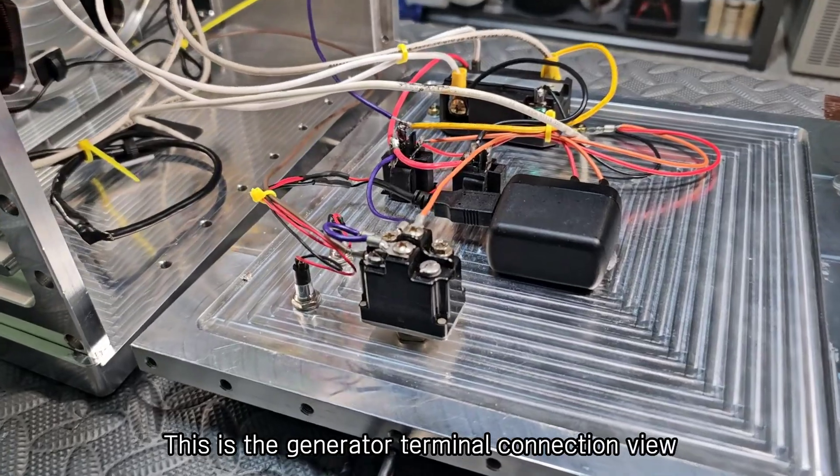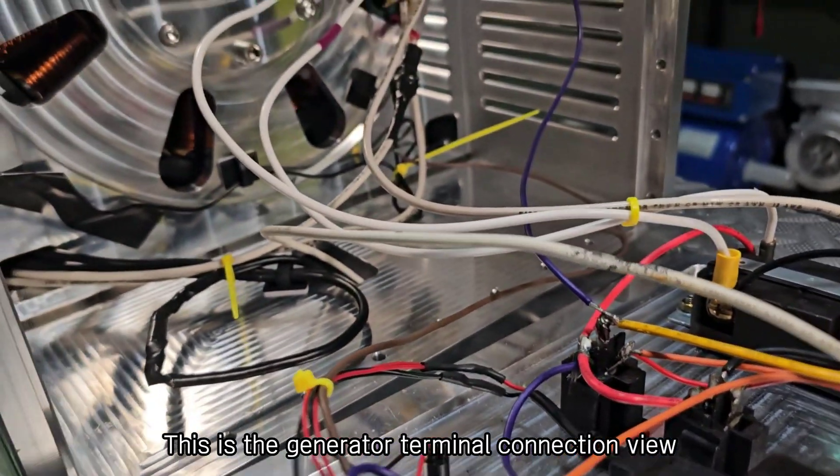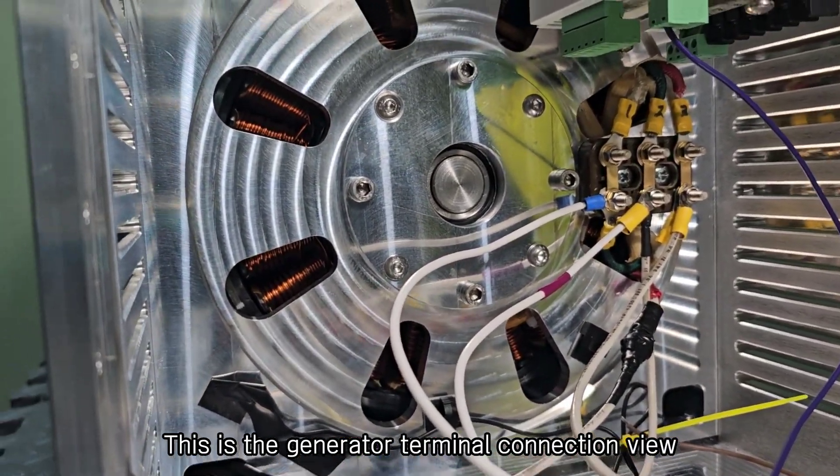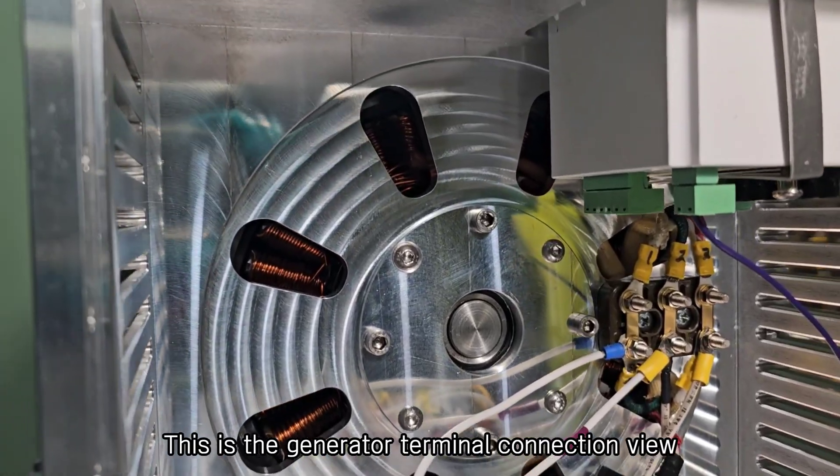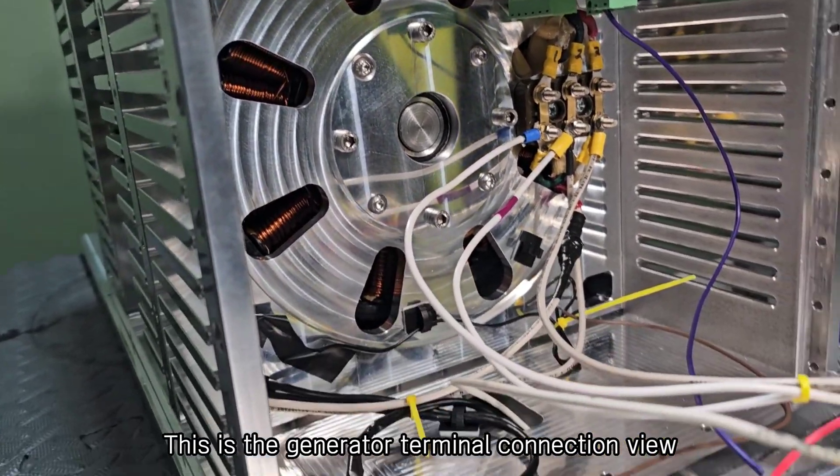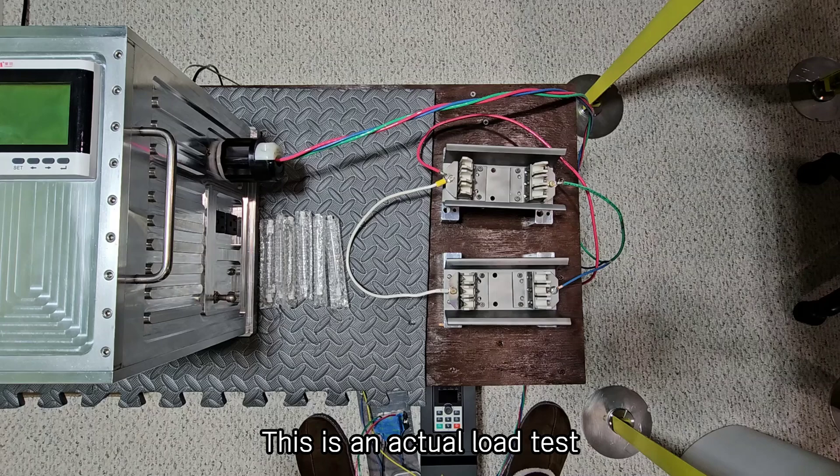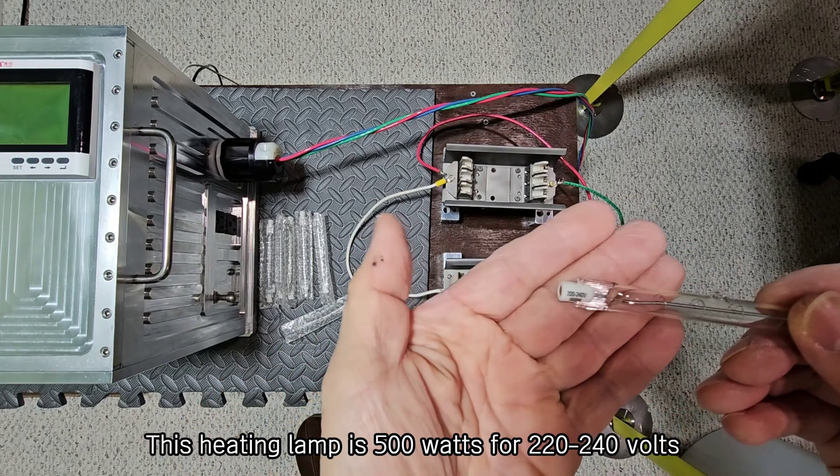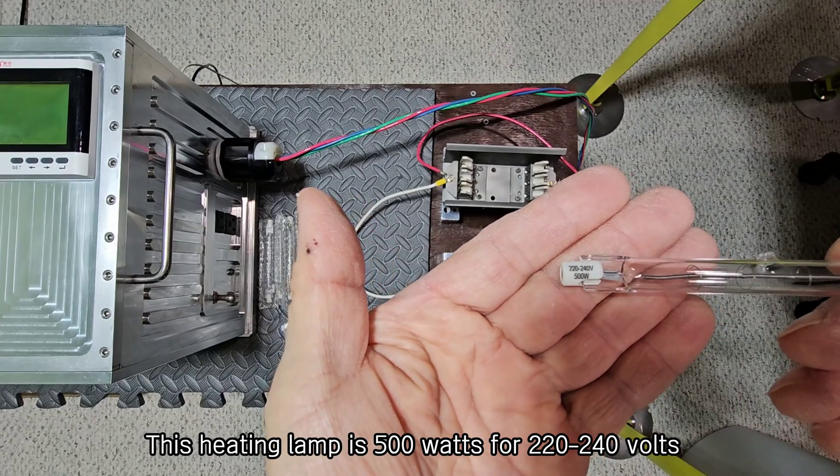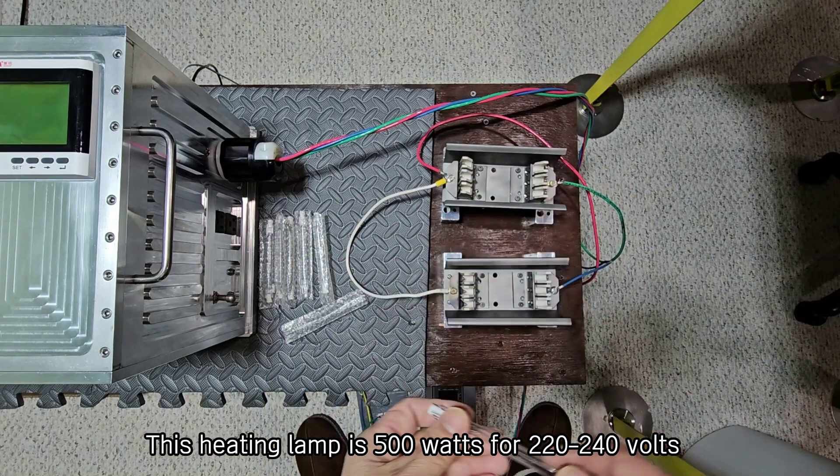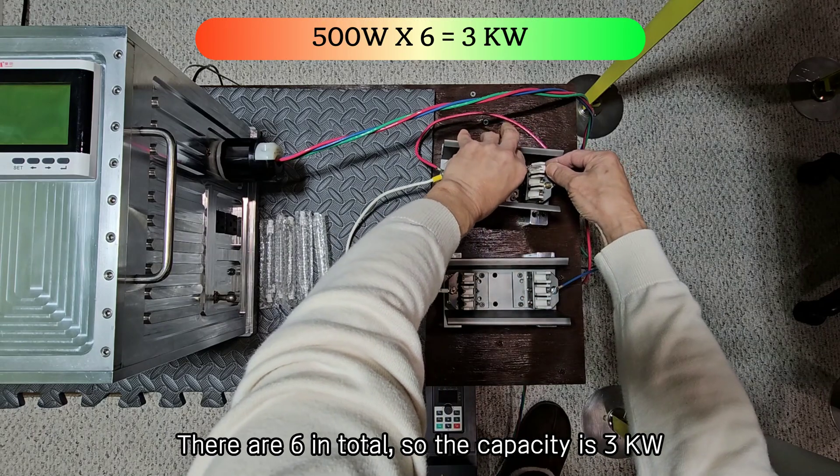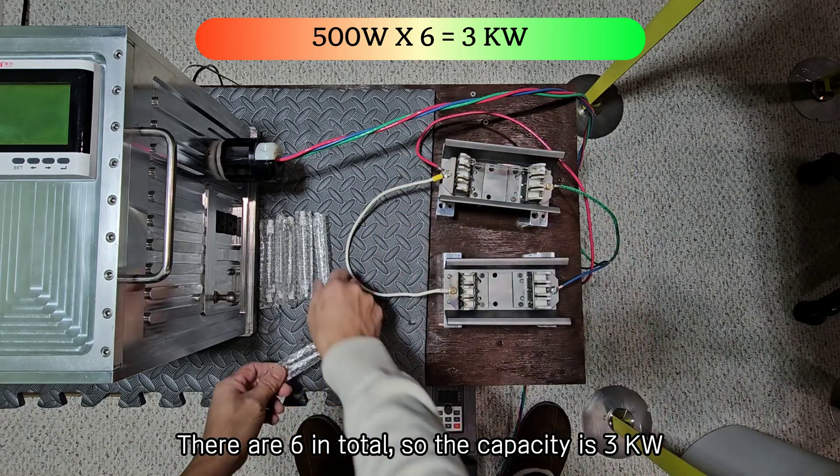This is the generator terminal connection view. This is an actual load test. This heating lamp is 500 watts for 220-240 volts. There are 6 in total, so the capacity is 3 kilowatts.